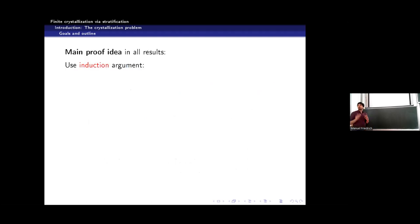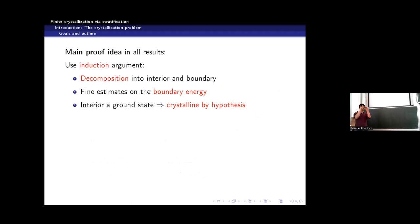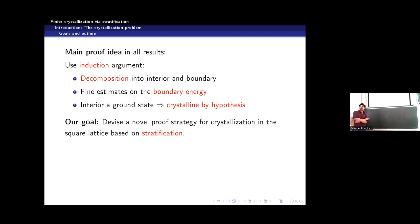Whatever model you take, the proof always works the same way: it is a proof by induction via methods in graph theory. You have points and bonds and consider these as a planar graph — atoms as vertices and bonds as edges. There is an induction argument: you look at the interior and the boundary, use induction on a smaller configuration, and then glue the pieces together. Leonhard and I wanted a different proof strategy using what we call stratification.